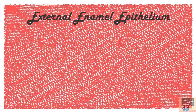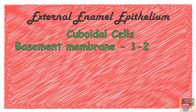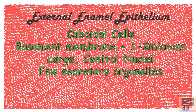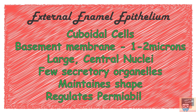The outer enamel epithelium cells are cuboidal in shape, with a basement membrane one to two microns thick. They have large central nuclei and only a few secretory organelles, so there is not much protein production. Their functions are to maintain the shape of the enamel organ and regulate its permeability.